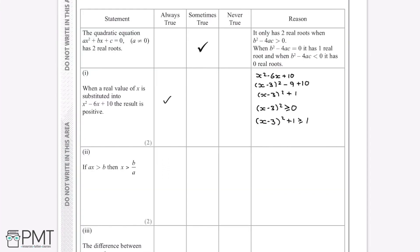So if ax is greater than b, then x must be greater than b over a. So first of all, we need to find out if this can ever be true.